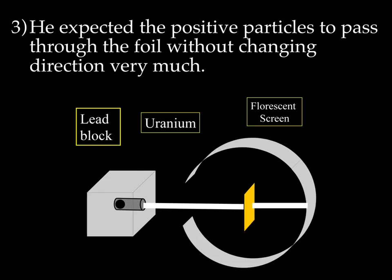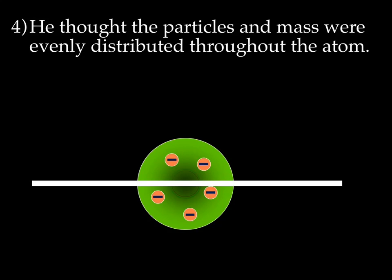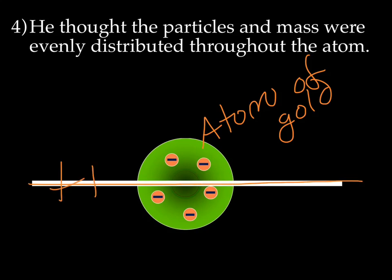This circle right here is a sensor. Because the particles were so small, he couldn't see them, but the sensor would let him know what was going on. He shot these positive particles through the gold foil. He thought they just passed straight through. He expected the positive particles to pass through the foil without changing direction very much. These particles are teeny, teeny, tiny. Invisible. In fact, they're basically protons. He thought the particles in mass were evenly distributed throughout an atom.